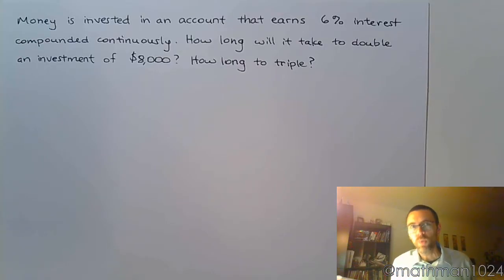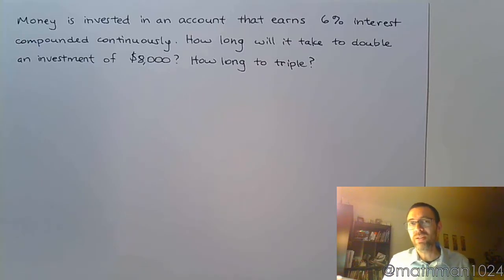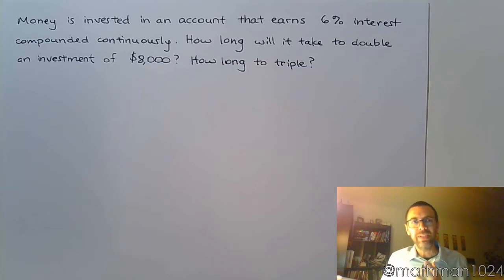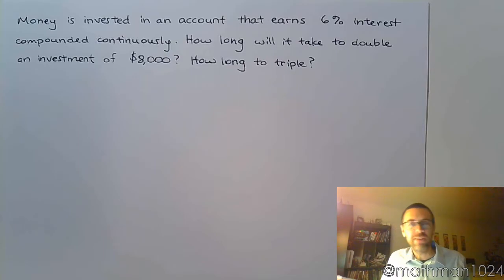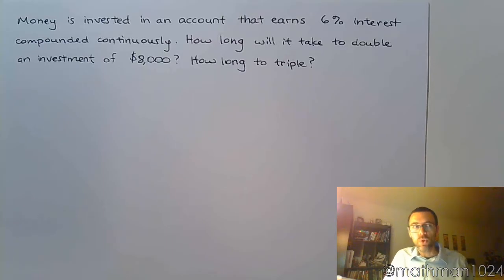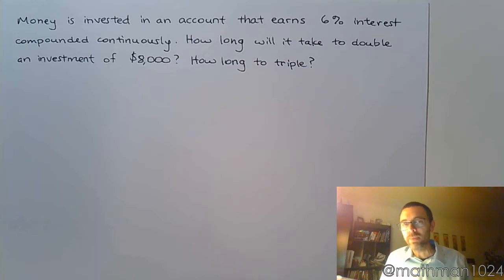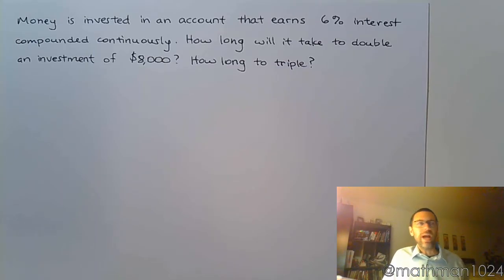Let's look at this problem: we have money invested into an account that earns six percent interest compounded continuously. We want to know how long it will take to double an investment of eight thousand dollars. Now, the interesting thing is that it doesn't matter how much you invest — whether eight thousand or eight million — the amount of time it takes to double is going to be exactly the same.